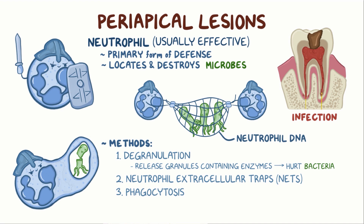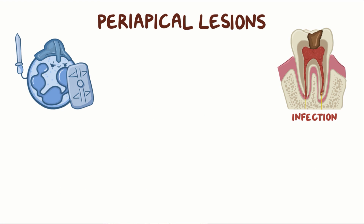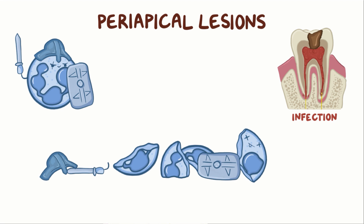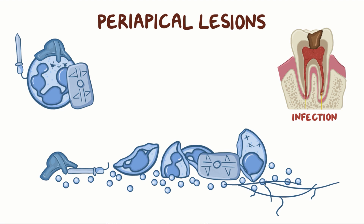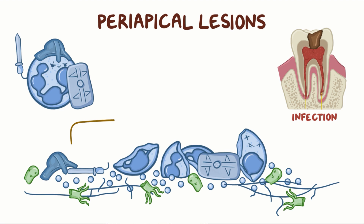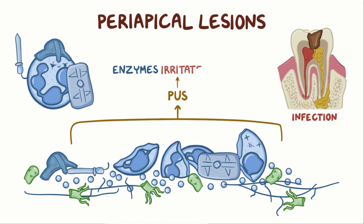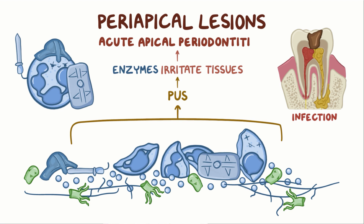All of this works really well most of the time. But fighting infection is a bloody affair, and many of the neutrophils perish during the fight. Macroscopically, the battlefield containing neutrophil remains, released enzymes, nets, and dead bacteria make up pus. A lot of it can accumulate given the severity of the infection. Enzymes from the pus will irritate the surrounding tissues, creating an acute phase of apical periodontitis.